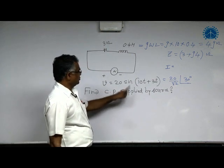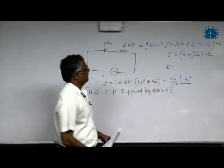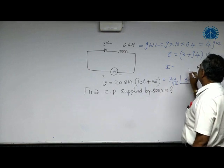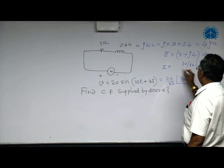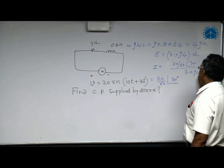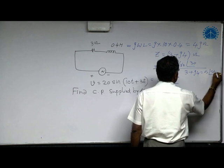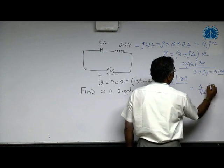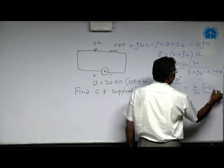So 20 by root 2 at an angle of 30 degrees is the phasor form equivalent of the voltage source. Similarly, the phasor current I equals voltage by impedance. Voltage is 20 by root 2 at angle 30 divided by 3 plus J4. This 3 plus J4 equals 5 at angle 53.14, which equals 4 by root 2 at angle minus 23.14.